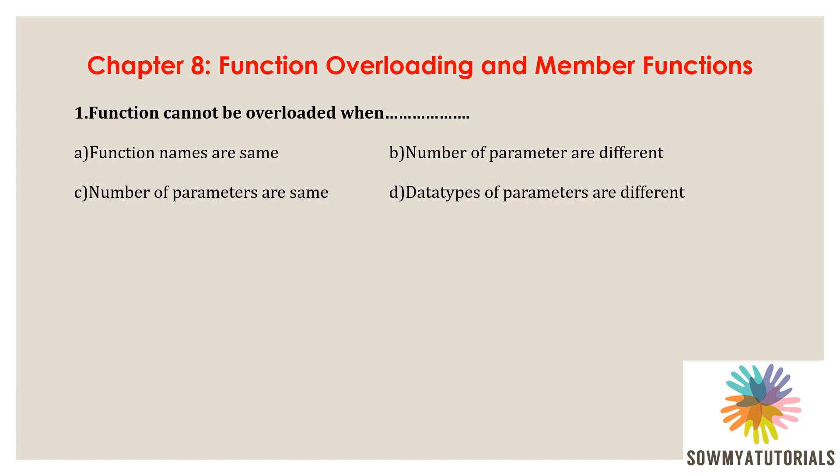Option A — function names are same — this is not the correct answer. Option B — number of parameters are different — this is also not the correct option. Option D — types of parameters are different — this is not a correct answer for this question. The correct answer is option C: number of parameters are same. When the number of parameters are same, the function cannot be overloaded.